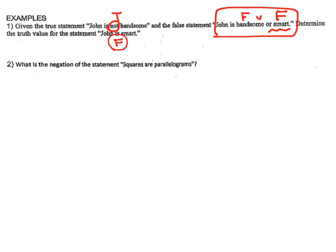Number 2 — what is the negation of the statement? Negation is simple, we just have to use the word NOT. So we can write it as: 'squares are not parallelograms.'